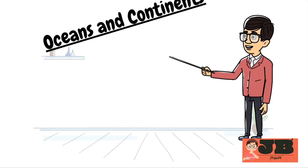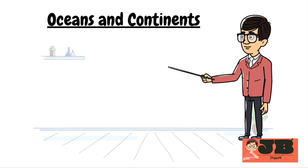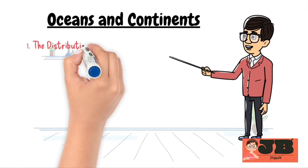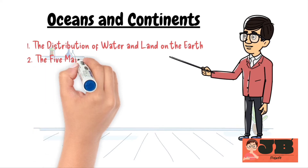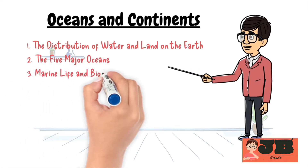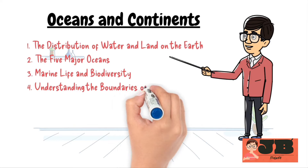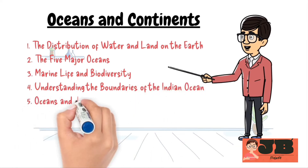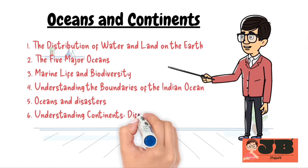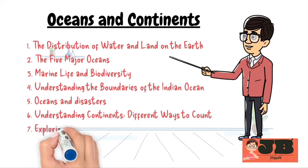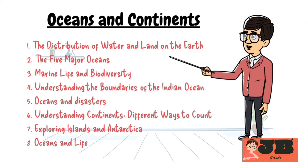Today in this video we will discuss: the distribution of water and land on the Earth, the five major oceans, marine life and biodiversity, understanding the boundaries of the Indian Ocean, oceans and disasters, understanding continents, different ways to count, exploring islands and Antarctica, and oceans and life. So let's start.